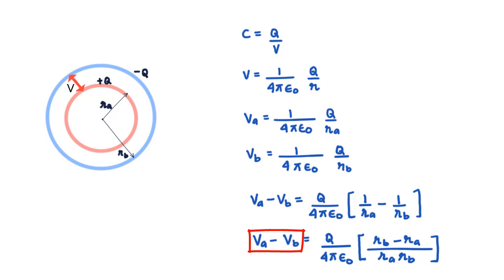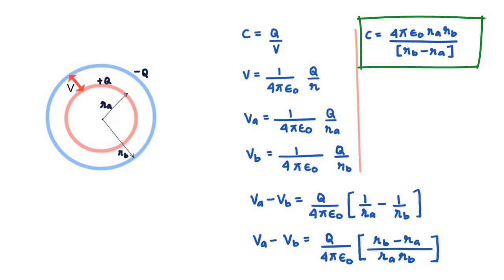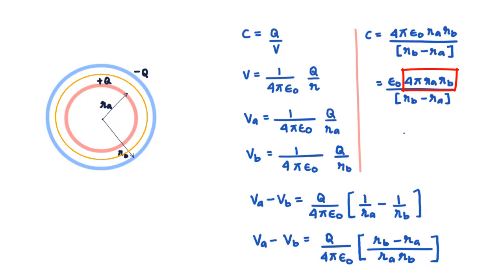Knowing the potential difference V_AB, the capacitance is C = Q/V, which gives C = 4πε₀·Rₐ·R_b/(R_b − Rₐ). If we examine this formula, we can rewrite it as ε₀ · (4πRₐR_b)/(R_b − Rₐ). The term 4πRₐR_b is the area of a sphere between radii Rₐ and R_b — it is the geometric mean of the areas of the two spheres. Let us call this area A.